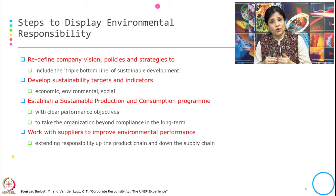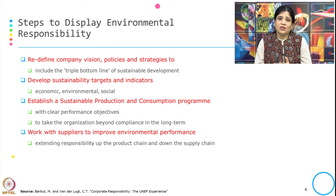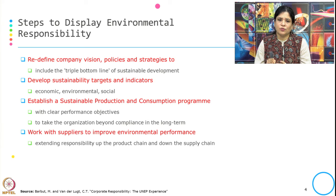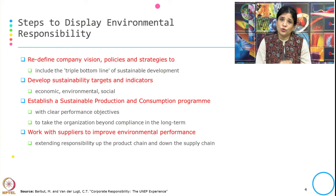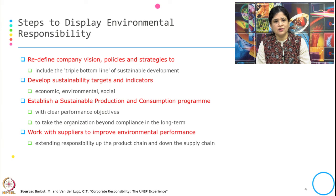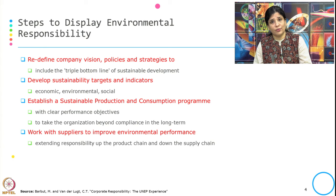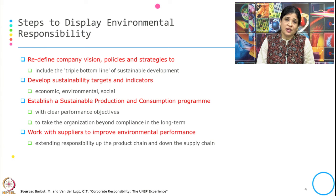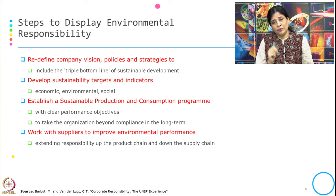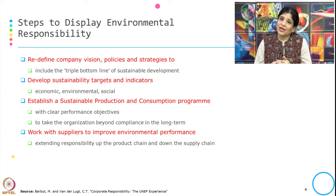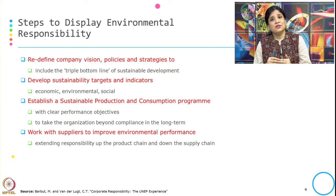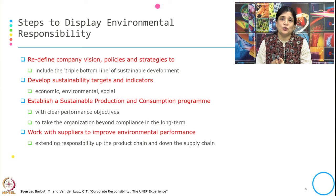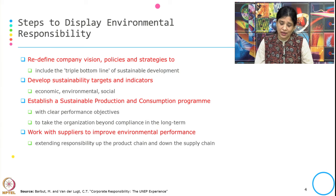Another step is to work with suppliers to improve environmental performance — extending responsibility up and down the supply chain. How you source raw materials is typically through suppliers, so beyond the boundary of the firm, when they receive raw material inputs for production, they can display environmental responsibility in sourcing. They can work with suppliers to improve environmental performance, including the supplier of raw materials.